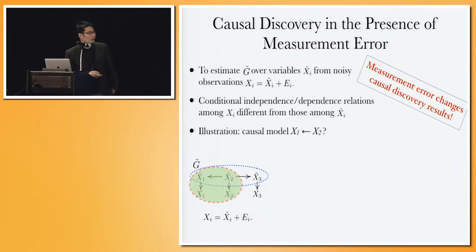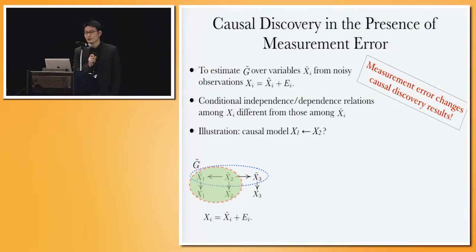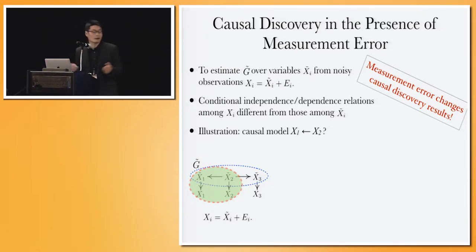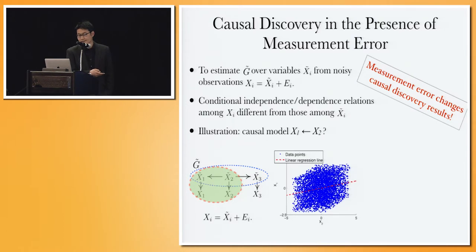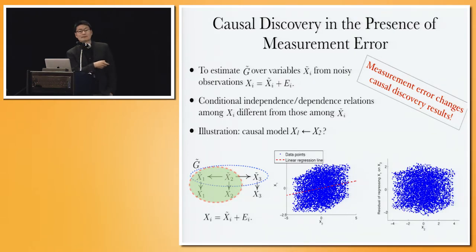Even if you apply structural equation model-based methods, you see the same issue. Here, x2 causes x1 in the true causal model. Without measurement error, when you regress x2 on x1, the regression residual will be independent from x2 — that's how we estimate the causal direction in the linear non-Gaussian case. However, because of measurement error in all variables, when you regress x1 on x2 instead of the true underlying x1-tilde and x2-tilde, the error term will not be independent from the true cause x2 or x2-tilde. So we have to do some correction.